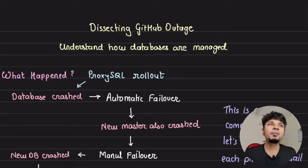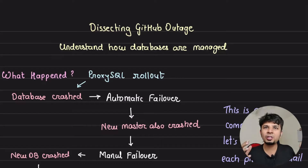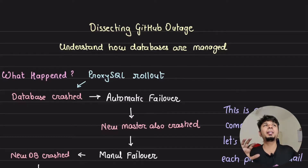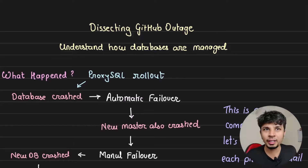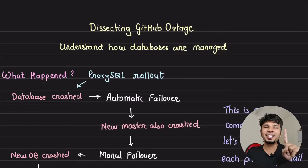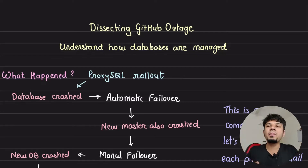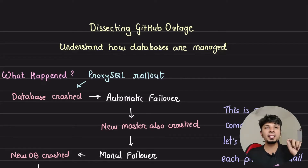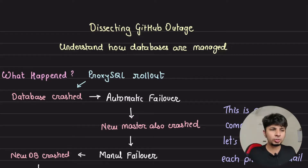How are databases managed in production? When a master goes down, we've all heard that some replica is chosen and promoted to be the new master. Is this something an engineer does manually, or are there tools to do it? In this video, we dissect a GitHub outage, and apart from understanding what exactly happened and how GitHub mitigated it, we spend significant time learning how databases are managed in production and the tools companies like GitHub use to ensure optimal DB performance and very high availability.